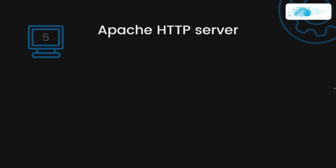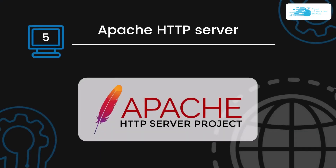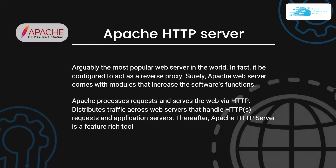At number 5 we have the Apache HTTP server. Apache HTTP server is arguably the most popular web server in the world, and other than being a web server it can also be configured to act as a reverse proxy. Apache web server also comes with modules that increase the software's functions.